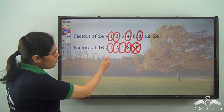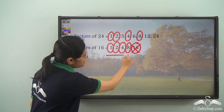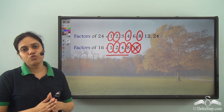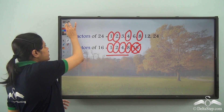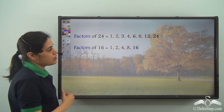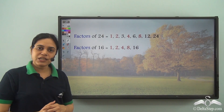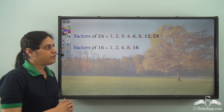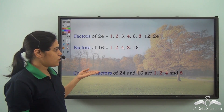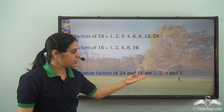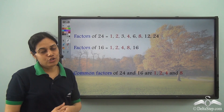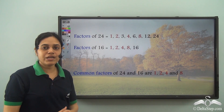So the common factors of 16 and 24 are 1, 2, 4, and 8.